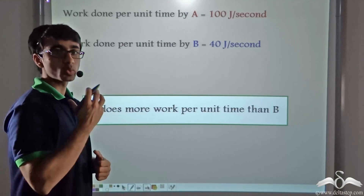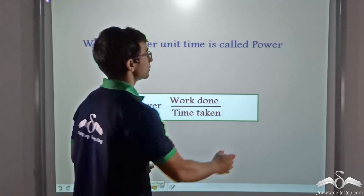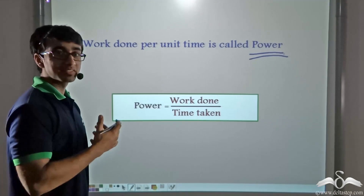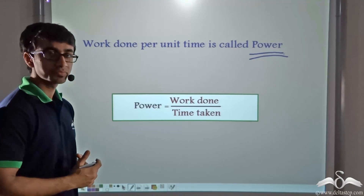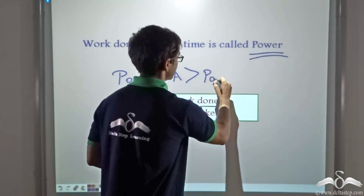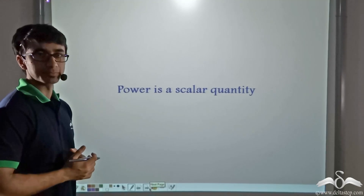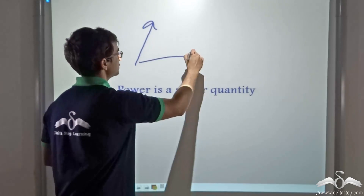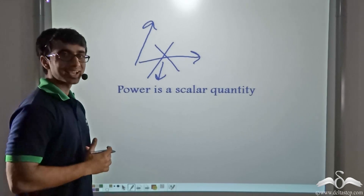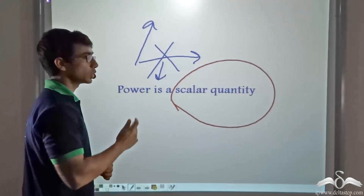This work done per unit time can be quantified and is known by a particular name — it is called power. Power is nothing but work done divided by time taken. The power of weightlifter A is greater than the power of weightlifter B. Power is a scalar quantity because it has no direction associated with it — power in the forward, backward, or any direction has no significance in physics.